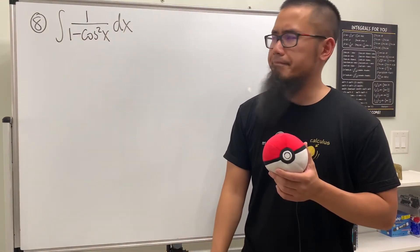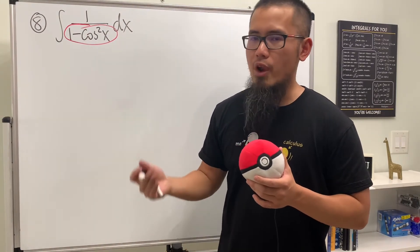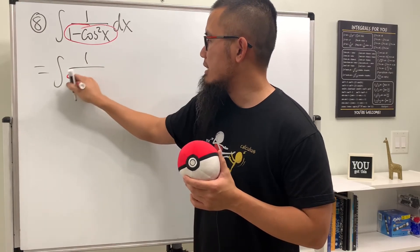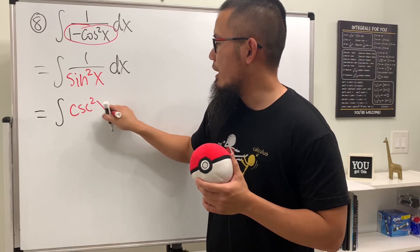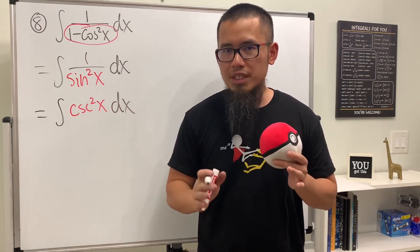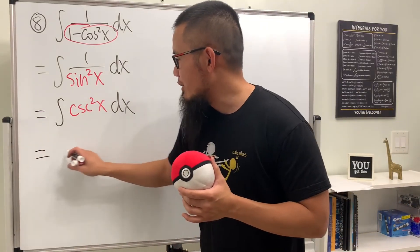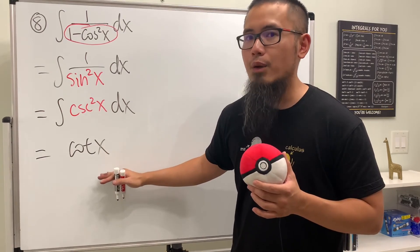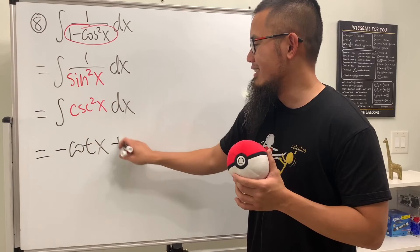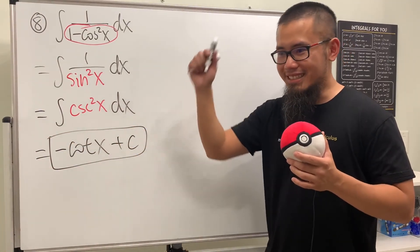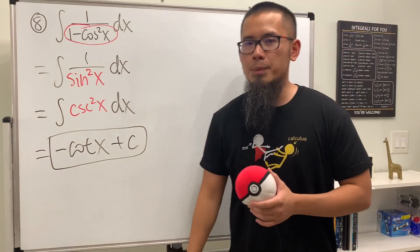For number eight we have the integral of one over one minus cosine squared x. This is nicely equal to one over sine squared x, because one minus cosine squared x equals sine squared x. Better yet, one over sine squared x is just cosecant squared x. We know that the derivative of cotangent x gives negative cosecant squared x, so the answer is negative cotangent x plus c. Hopefully you found this video helpful — check out my other videos for more practice on integrations.